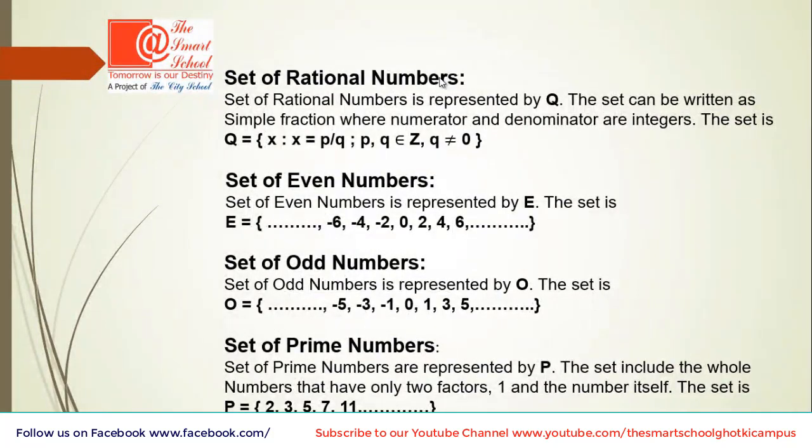Now, set of rational numbers. Set of rational numbers is represented by Q and the set can be written as simple fraction where numerator and denominator are integers. The set is Q equals X where X equals P upon Q and P and Q are members of Z. Members of Z we just revised? Yes, means member of set of integers and where Q is not equals to 0.